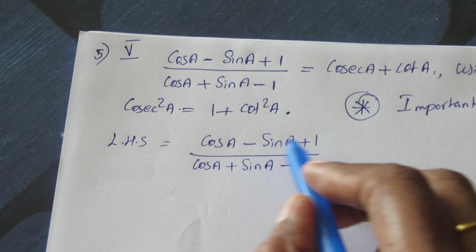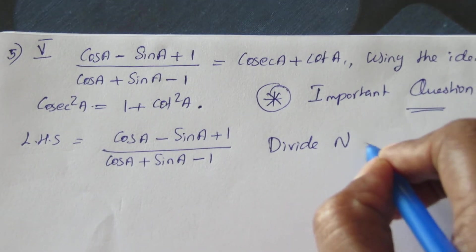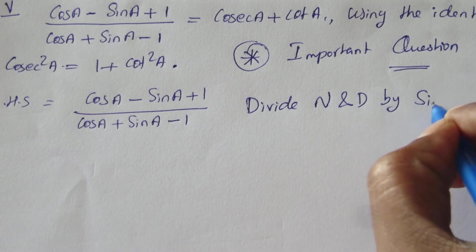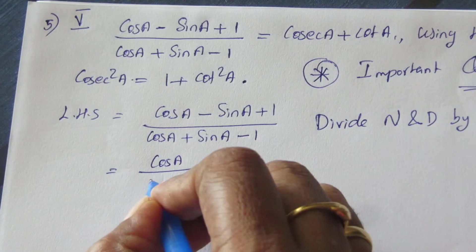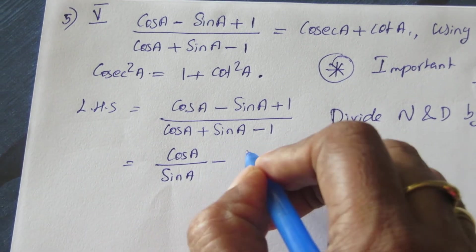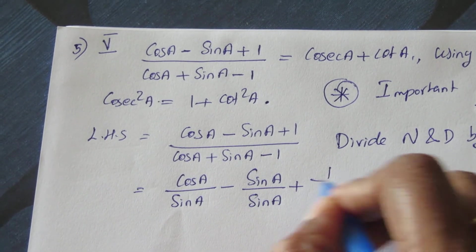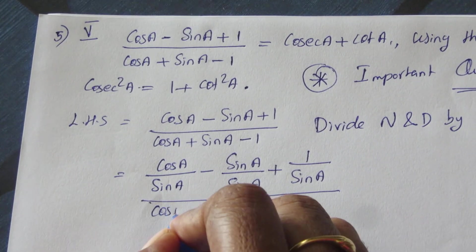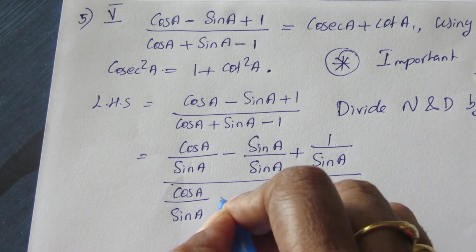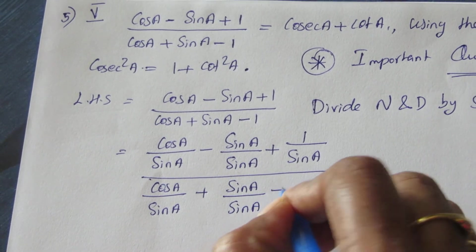Now, divide numerator and denominator by sin a. So we get: cos a by sin a minus sin a by sin a plus 1 by sin a, whole thing divided by cos a by sin a plus sin a by sin a minus 1 by sin a.